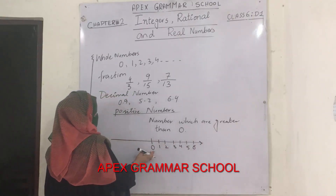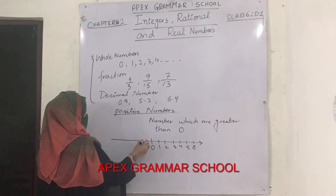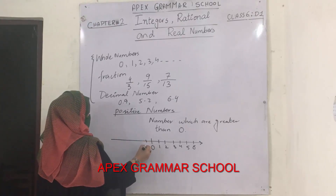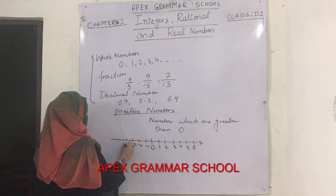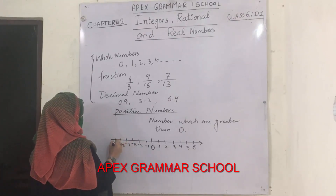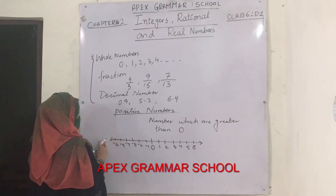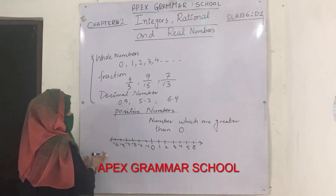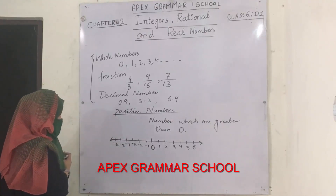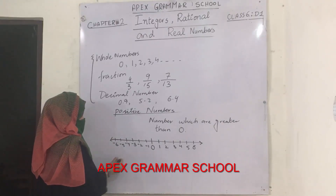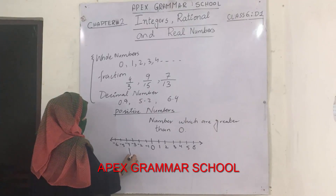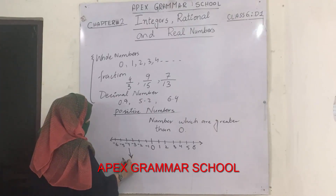Towards the left of 0, there are some numbers which are minus 1, minus 2, minus 3, minus 4, minus 5 and minus 6. This arrow shows that these numbers continue in the left direction. So these are called negative numbers.